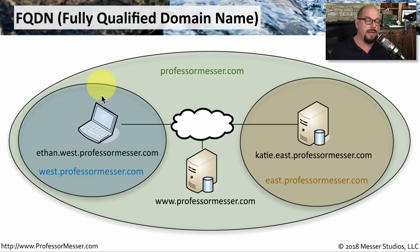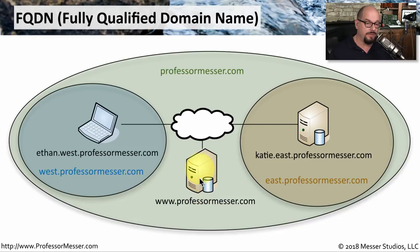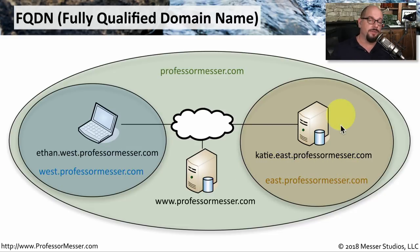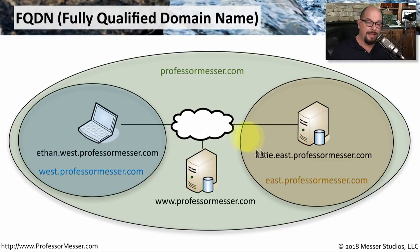Visually, you can see how this domain name structure works. You have a fully qualified domain name that encompasses everything within professormesser.com. Within there, there may be the web server at www.professormesser.com. We may break out these domains further to have west.professormesser.com and east.professormesser.com, with servers specified as ethan.west.professormesser.com and katie.east.professormesser.com.